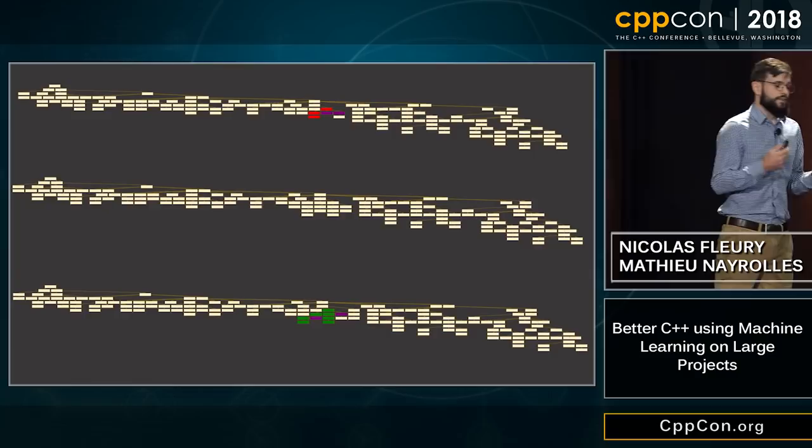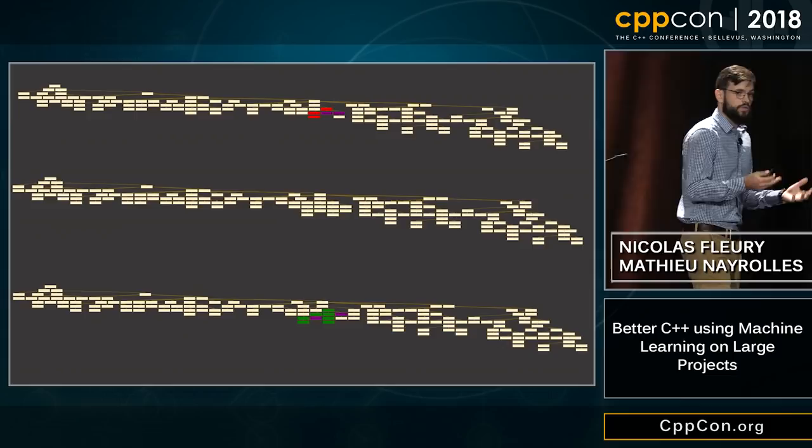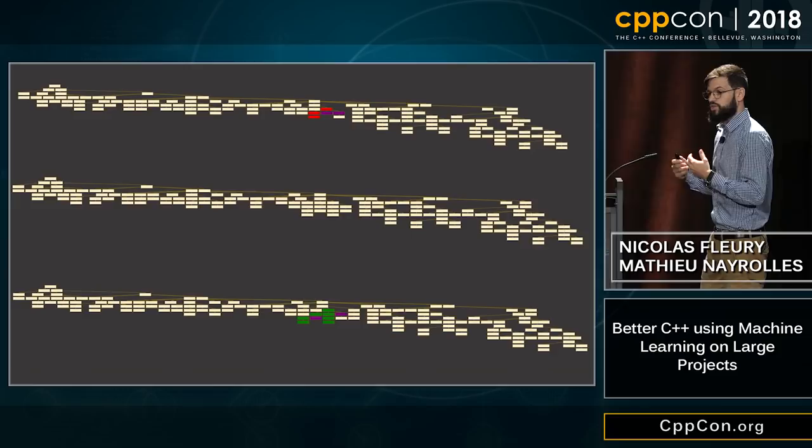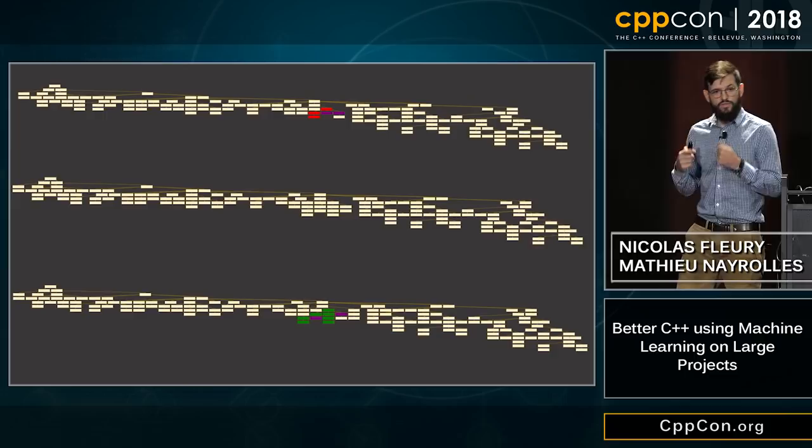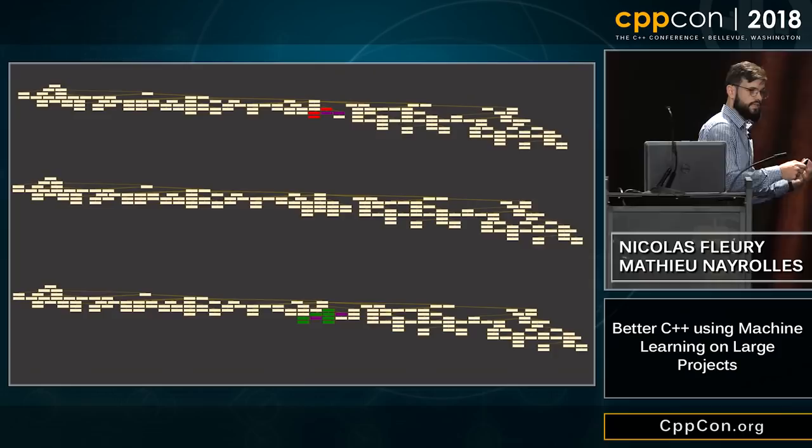We are working on diffs, not complete pieces of code — on a diff you can't have a complete AST. So what we use instead are partial abstract syntax trees. And because we are abstracting the values of the nodes of the AST, we end up working with partial abstracted abstract syntax trees.